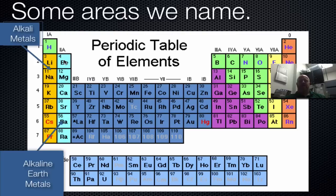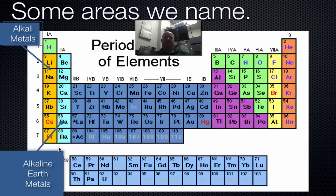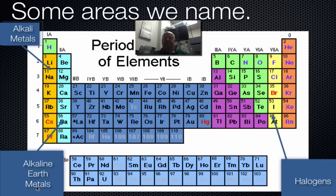Right next to the alkali metals, we call the second group the alkaline earth metals. They have some properties similar to the alkali metals, but they are also very similar to each other in terms of their properties.